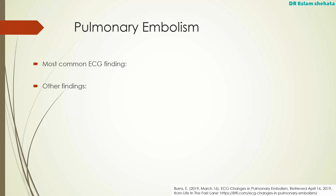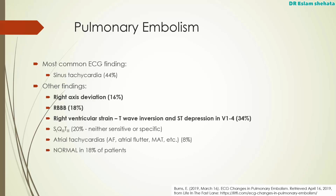What's the most common finding on the ECG of a patient with pulmonary embolism? It's sinus tachycardia — and it's also probably the least specific finding. The pain alone might be enough to cause a sinus tachycardia. There are some other findings, though, that are a little bit more specific.